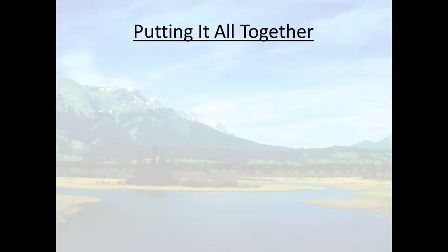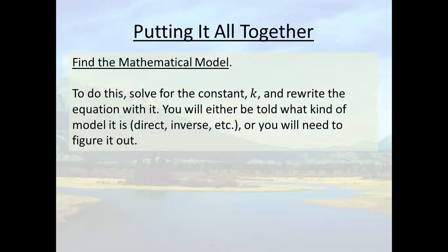Alright, so what are some ways that we can do variation problems? It could ask you to find a mathematical model. Now, to do that, the first thing that we need to do is solve for the constant k. And then we just rewrite the equation with it. You'll be told ahead of time whether it's going to be a direct variation or an inverse variation. And we just plug our values in and calculate what k is.